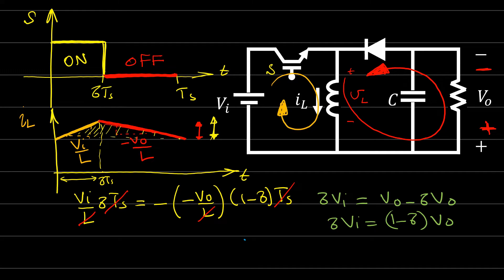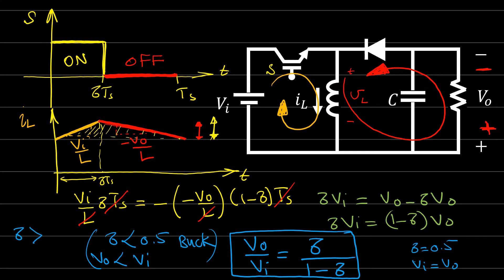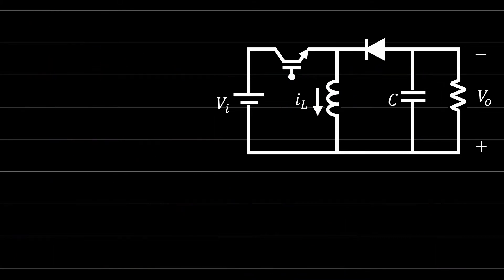The relation between input and output voltage is V_out / V_in = δ / (1 − δ). If you look at this, V_out can be larger or smaller than V_in depending on the duty cycle. If δ = 0.5, the output equals the input. If δ < 0.5, it acts as a buck converter (output less than input). If δ > 0.5, it acts as a boost converter. This is the buck-boost converter voltage conversion ratio.